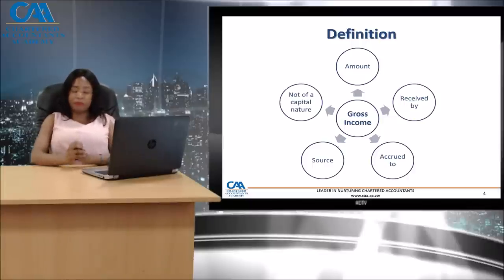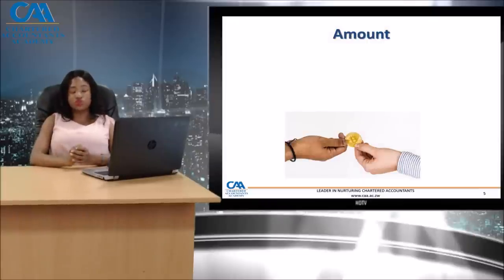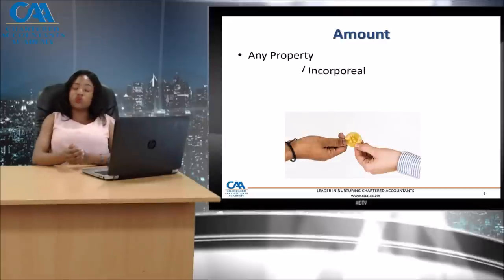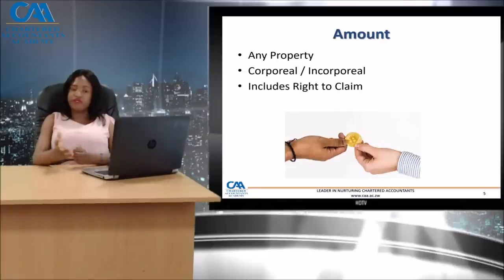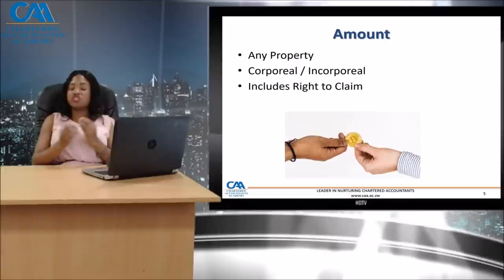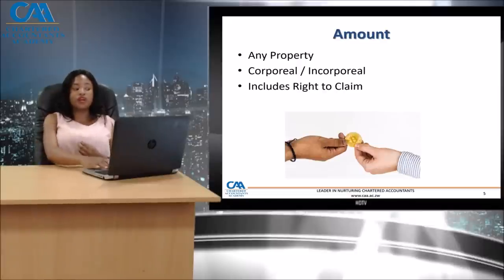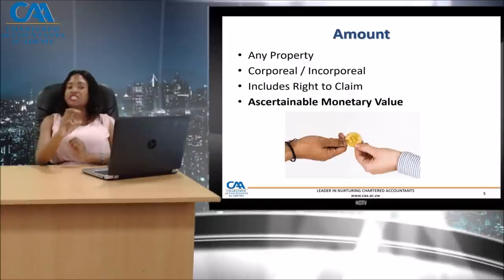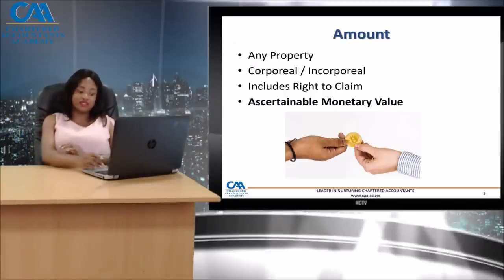Amount is dealt with under Section 2 of the Income Tax Act, which defines amount as any property, corporeal or incorporeal, which also includes a right to claim. For example, if I enter into a transaction with you — you give me your iPhone and I give you my laptop — for gross income purposes, we have exchanged an amount, because it has an ascertainable monetary value. So as long as two taxpayers exchange something whose value can be determined, there is an amount.